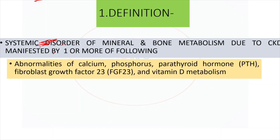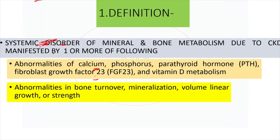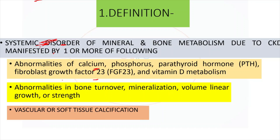There might be abnormalities of things controlled by the kidney — problems in calcium, phosphorus, parathyroid hormone level, FGF-23, and vitamin D metabolism. Or abnormalities of the bone in the form of mineralization, turnover, or strength. Third, any kind of soft tissue calcification including the vessels. So the proper definition: it is a systemic disorder of bone and mineral metabolism occurring in CKD patients, manifesting as either abnormality of biochemical parameters, bone abnormalities, or soft tissue calcification.